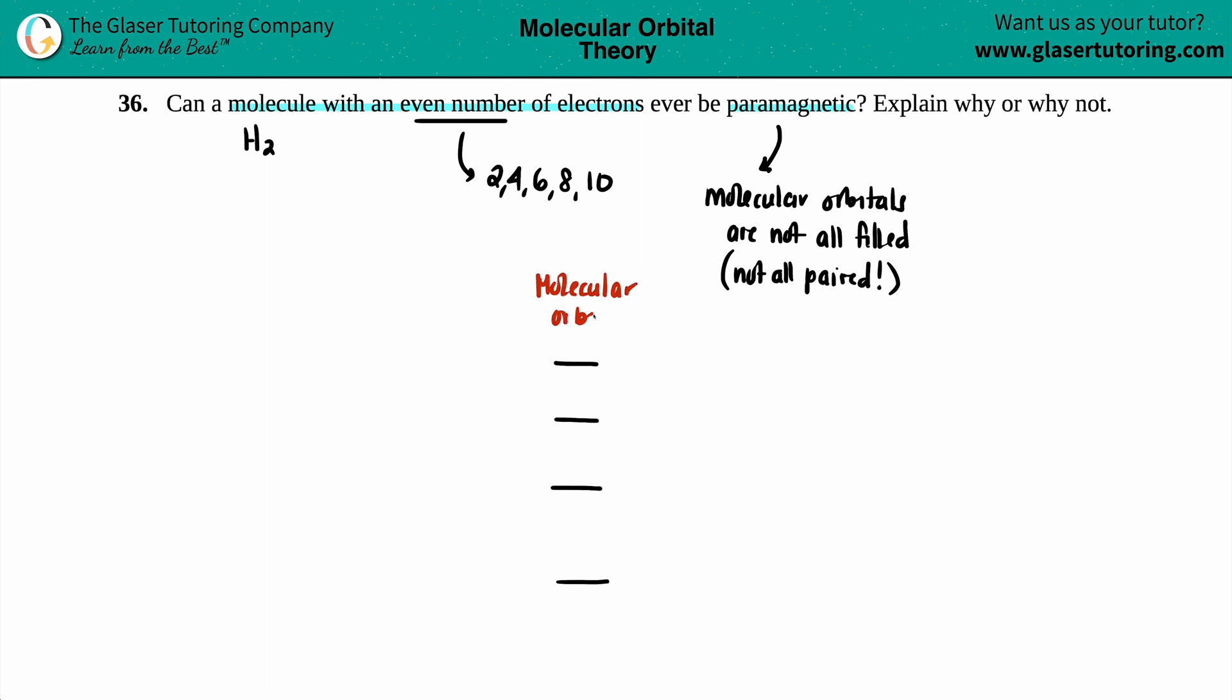Now, don't worry about why I stack these as well. That's not really for this question. But just know that as you go higher and higher with your molecular orbitals, you're gaining energy. So technically, your molecular orbital that's at the highest of the list, that's the most energy molecular orbital, and the one down below is the least energy.